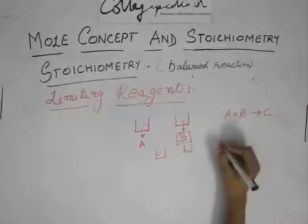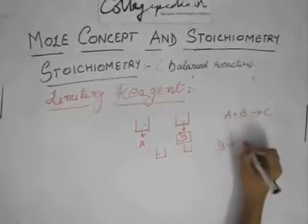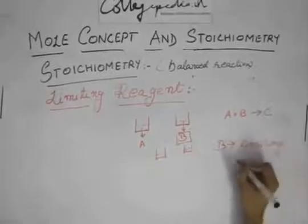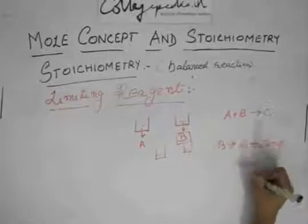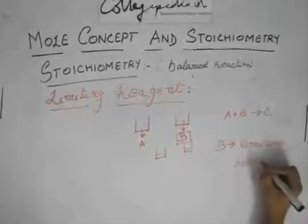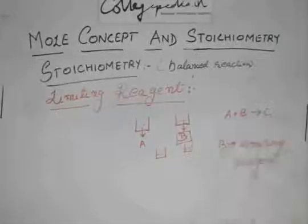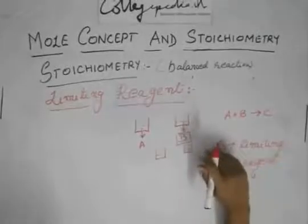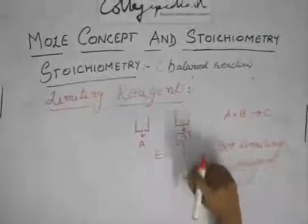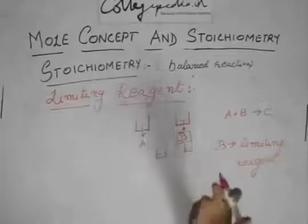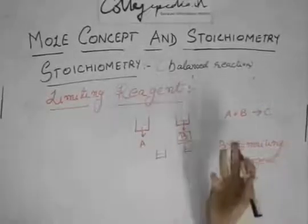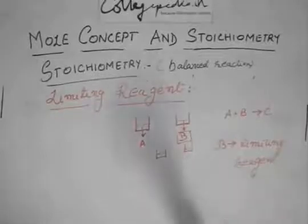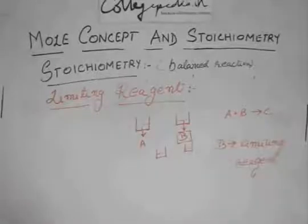So this B will be called our limiting reagent because it limits the reaction and it stops the reaction because of getting consumed. So if there is no more B to react, then who will A react with? So B limits the reaction and so it is called the limiting reagent.